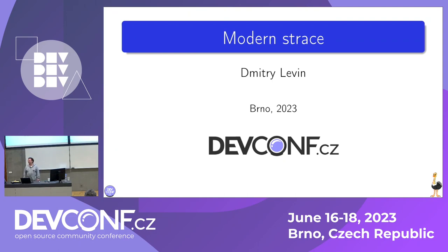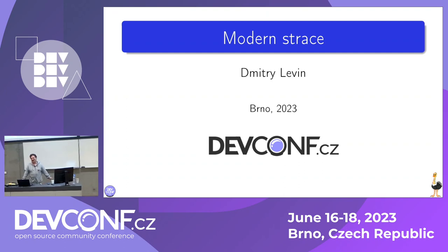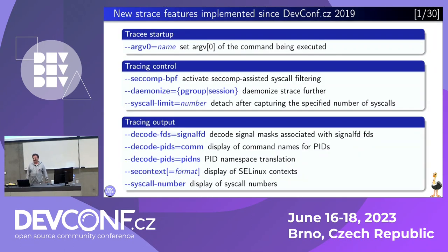Hello everybody. Thank you for coming to this talk. My name is Dimitri, and today I'll be talking about modern strace. Strace is a Linux system call tracer from user space with an older history. So what is modern strace? Well, it depends. For the purpose of this talk, modern strace is all the features accumulated since the previous talk I made at DevConf, which was also called modern strace. If you're interested in those things that used to be modern back then, you can have a look at that talk. But now we'll be talking about very new features, actually since 2019. Quite a lot of them for these several years.